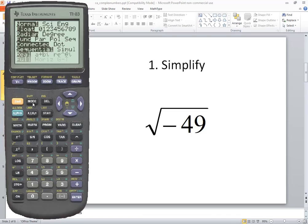If I go into mode, you'll see down here there's real, a plus bi, and then re carat theta i. If I come down to this line, right arrow, put my flashing cursor on a plus bi and press enter. And do second mode to exit out of that.